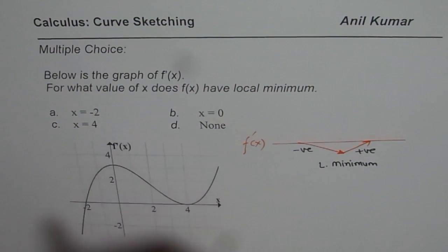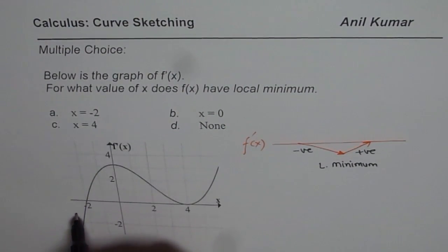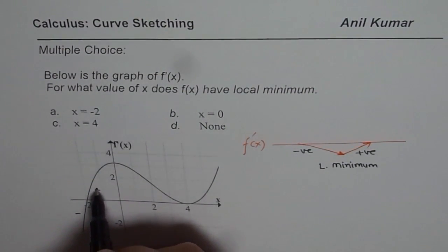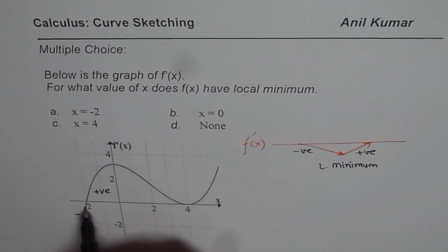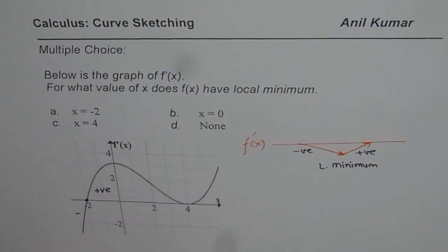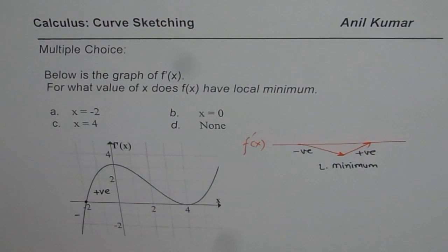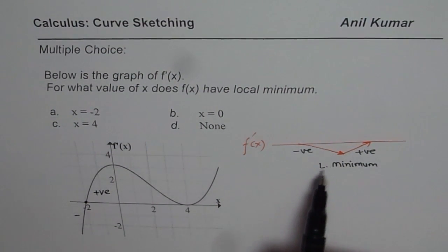From the graph of the derivative, this region is negative, and here it is positive. It changes from negative to positive at x = -2. That is the point where the function will have a local minimum.